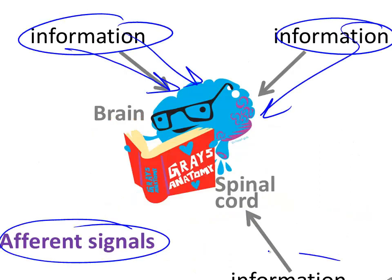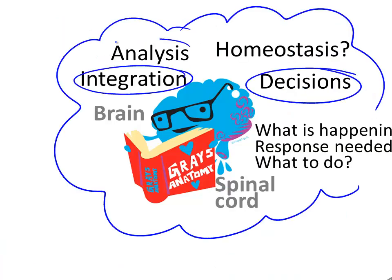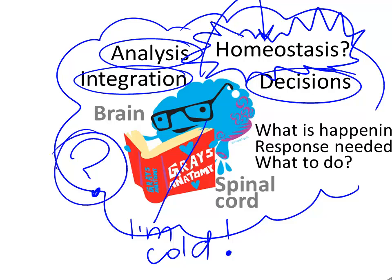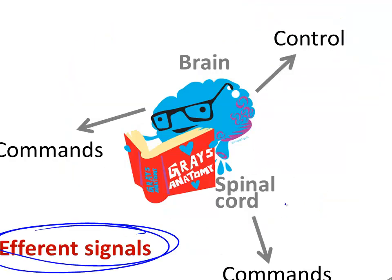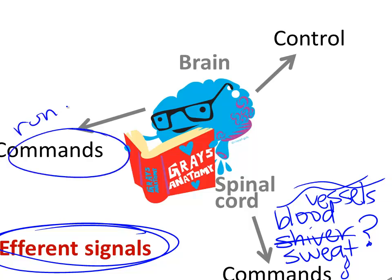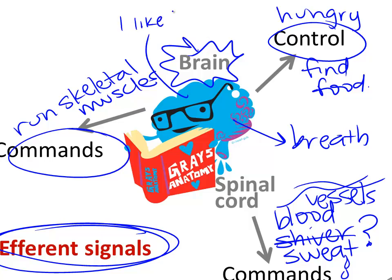Afferent signals send information to the brain about things going on in the body, whether it's pain or blood pressure. The brain then analyzes that information to maintain homeostasis, deciding whether you're cold or your blood pressure is wrong. Then the brain sends out efferent signals to effectors like blood vessels, sweat glands, skeletal muscle, or even other brain regions to change your behavior.